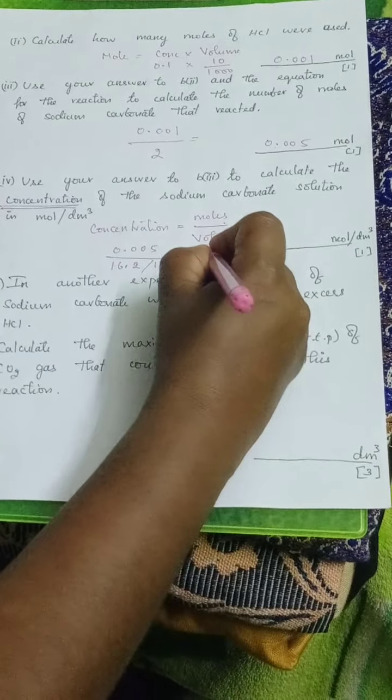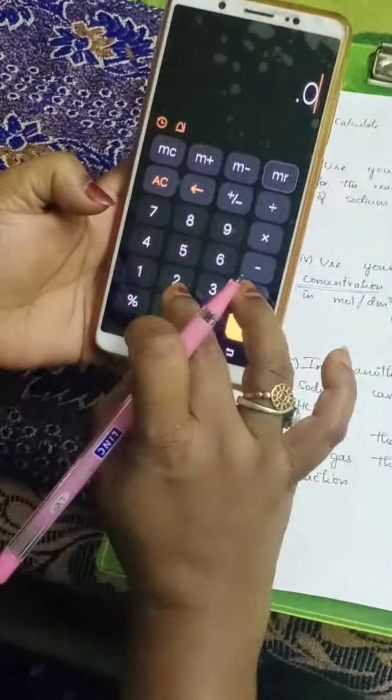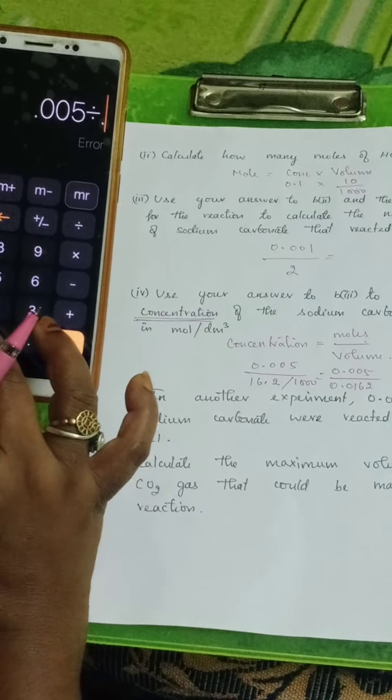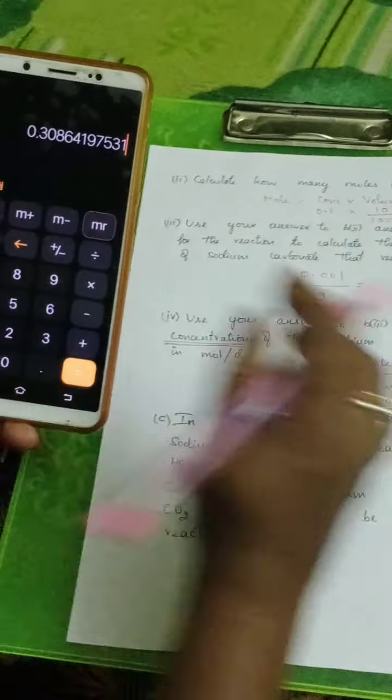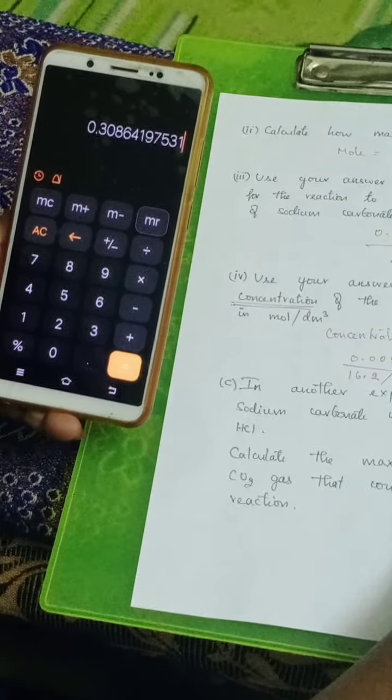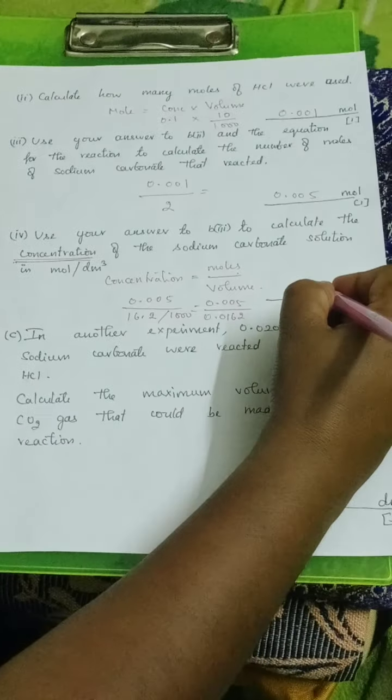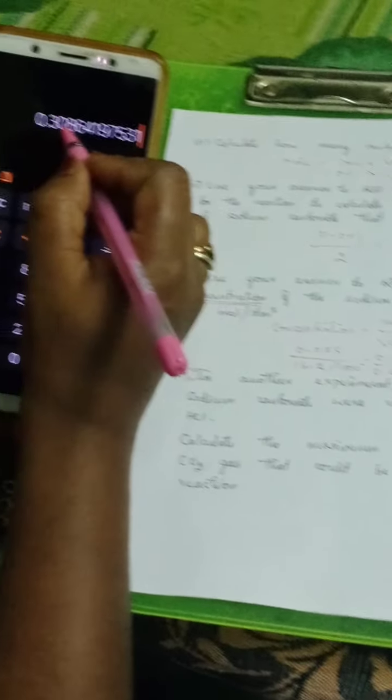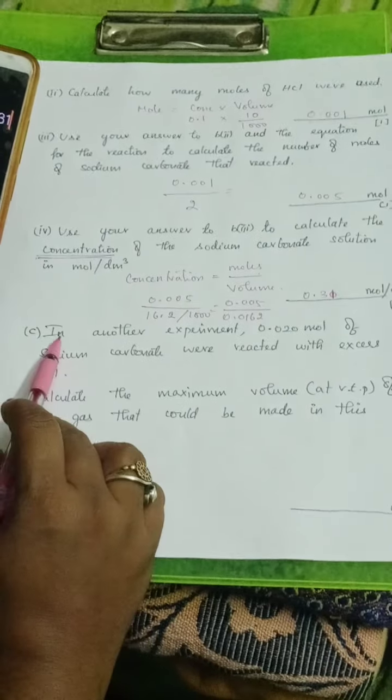So 0.0005 divided by 0.0162, you are getting 0.30. You can round it up to 0.31 or 0.312. Now see the next question.